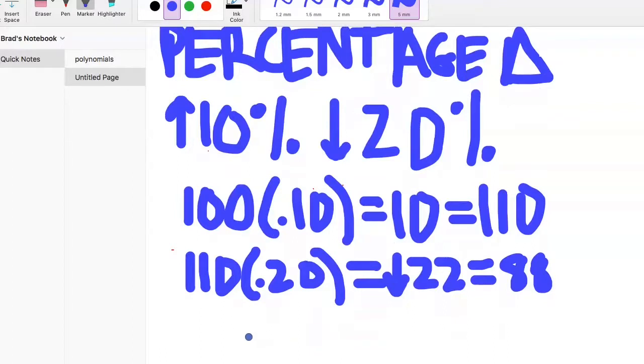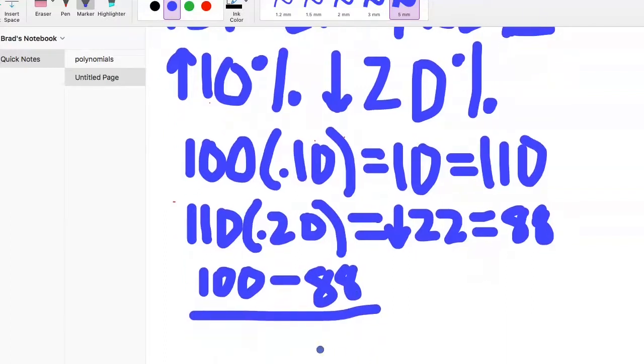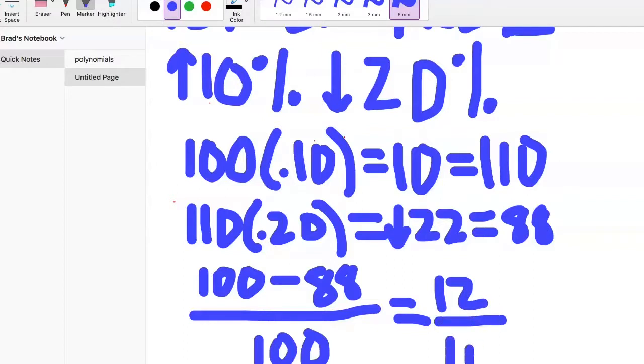So it actually has dropped by 12, because it was 100. So then we were going back to a percentage change. I don't know if you guys have seen that video. So 110 minus 88, all over what we started with, our old number, old minus new divided by old. That's the formula for percentage change. So 12 divided by 100 equals 12% decrease.